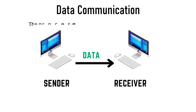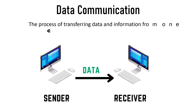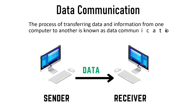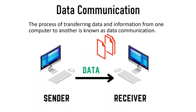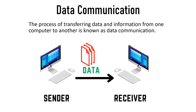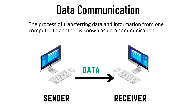The process of transferring data and information from one computer to another is known as data communication. In the computer network, computers are capable of transferring data from one computer to another. Simply, it is the sending of information from one computer to another computer in the network.